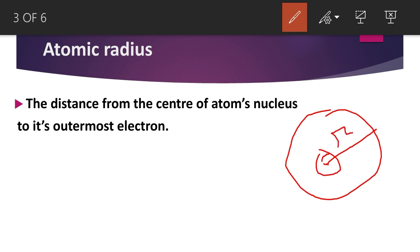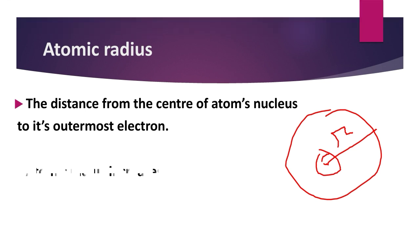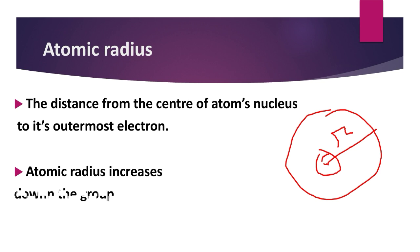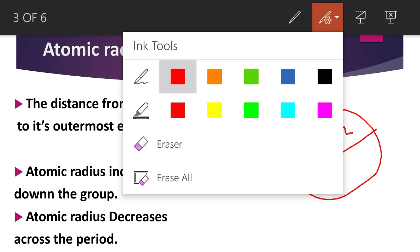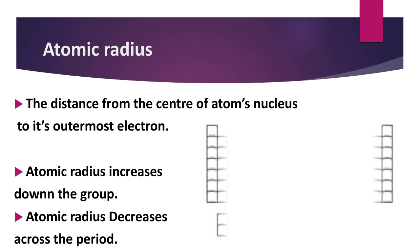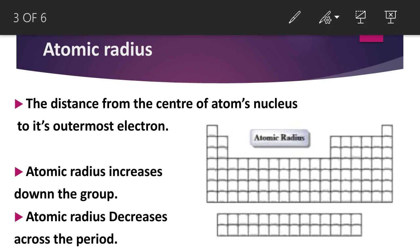The atomic radius varies in the periodic table. Atomic radius increases down the group, and atomic radius decreases across the period. The horizontal lines in the periodic table are known as periods, and the vertical columns are known as groups.